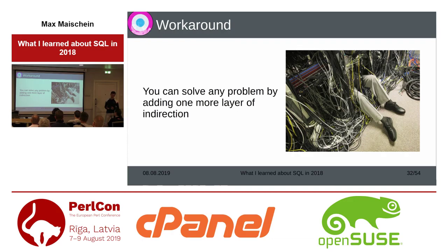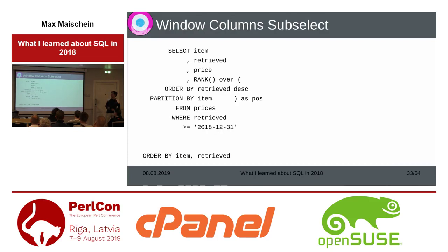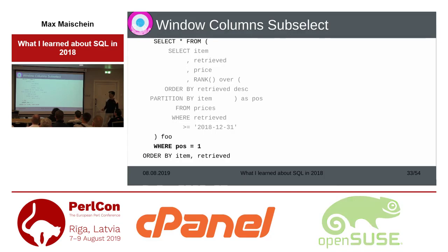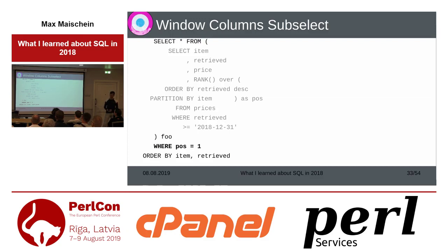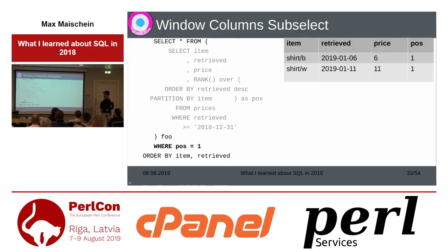We can solve any problem by adding one more layer of indirection. We take the SQL we have, wrap it as a subselect in one more SELECT statement, and in that outer SELECT statement 'pos' is available as a normal column and we can filter on it. It's not totally elegant, but it works and we get just those two lines in our result set with the current price.